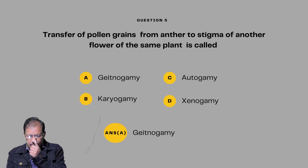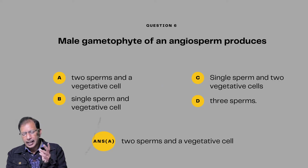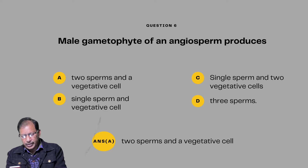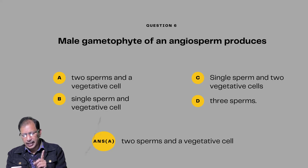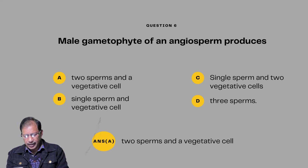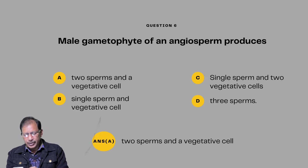Question number six: The male gametophyte of an angiosperm produces — A: two sperms and a vegetative cell; B: single sperm and a vegetative cell; C: single sperm and two vegetative cells; D: three sperms. Answer will be A — two sperms and a vegetative cell.